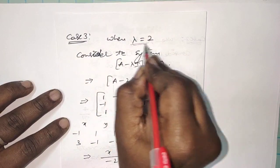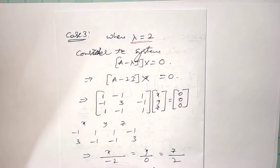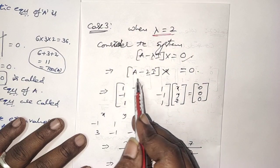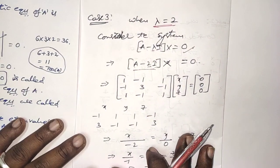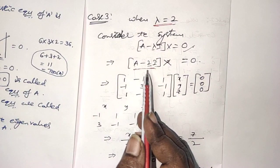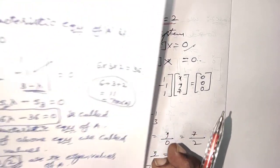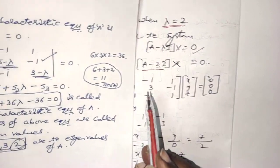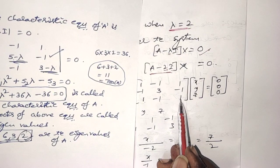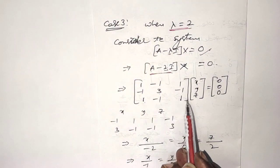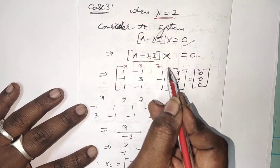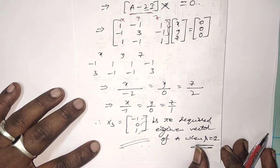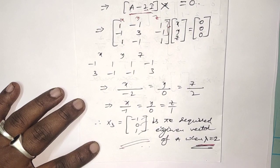Case 3: the last eigenvalue is 2. Consider the system (A minus 2I) X equals O. Replace lambda equals 2: diagonal entries become 3 minus 2 equals 1, 5 minus 2 equals 3, and 3 minus 2 equals 1. Solving the first two equations, the eigenvector corresponding to eigenvalue lambda equals 2 is X3 equals [minus 1, 0, 1].